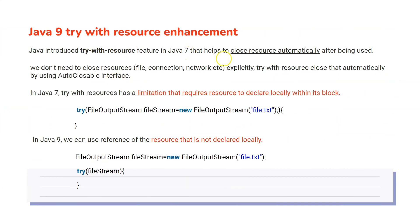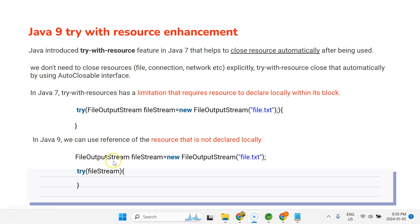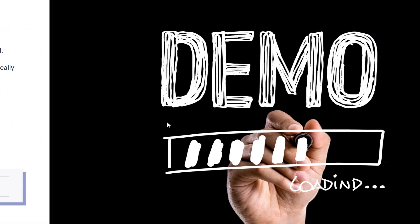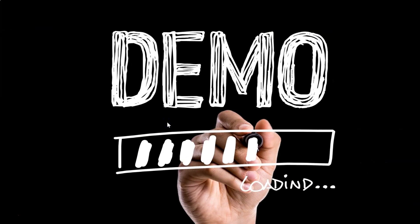Try-with-resources was introduced in Java 7. We can have our own custom resource by implementing the AutoCloseable interface. In Java 7 there was a limitation — you had to declare and initialize the resource inside the try itself. To avoid this limitation, an enhancement was made in Java 9 where you can create an object outside the try block and then use the reference inside it.